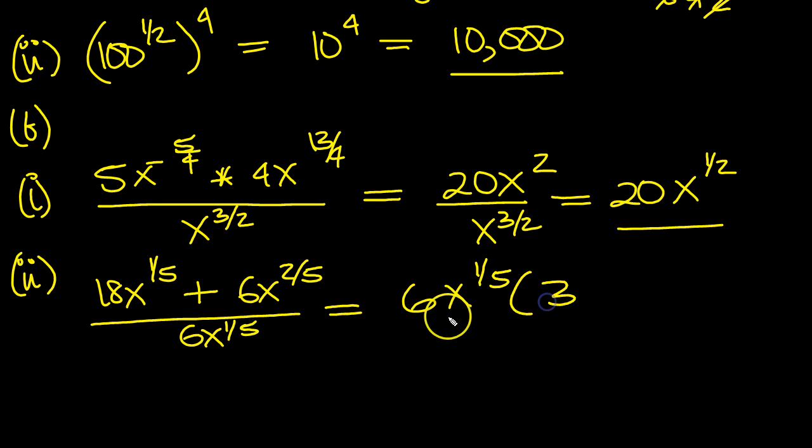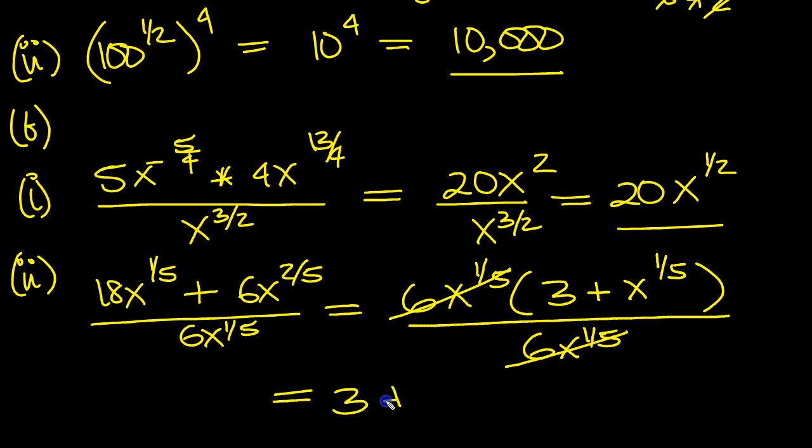we times this by 3, that gives us 18x to the 1/5. To get this, we've got the 6, we just need another x to the 1/5, because times you add the powers. And if we times this and expanded this bracket in reverse, you get 6x to the 2/5, which is what we've got there. All divided by 6x to the 1/5. So these terms cancel top and bottom, and we're simply left with 3 plus x to the 1/5.